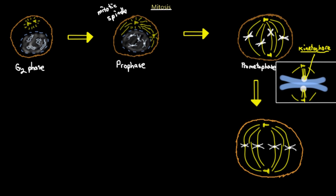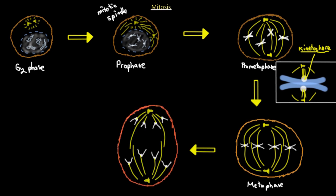The next stage after pro metaphase is metaphase. What's important here is that the chromosomes have lined up perfectly in the middle of the cell. The microtubules have been pushing the chromosomes apart, and they reach an equilibrium stage where both microtubules are pulling them in opposite directions, causing them to line up at the same length in the middle of the cell.